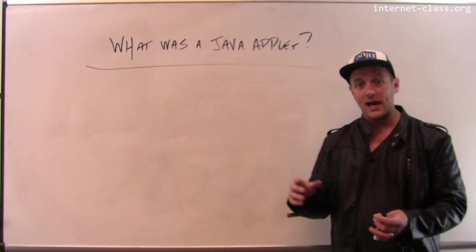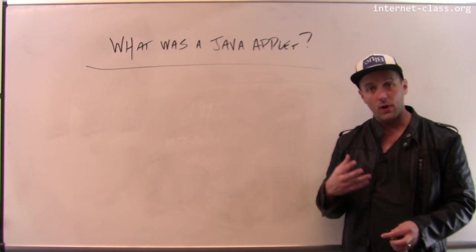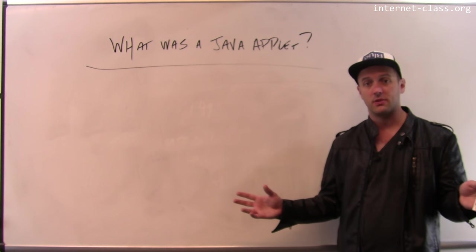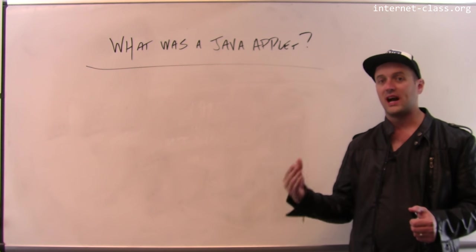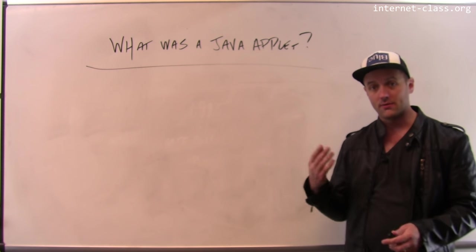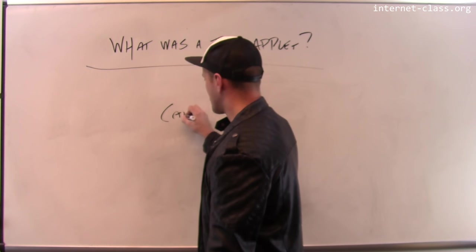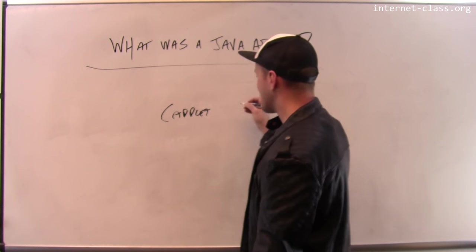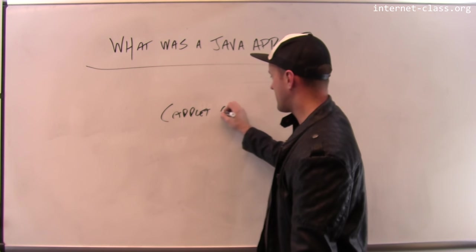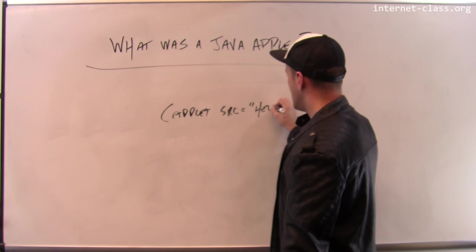So what was a Java Applet? Browsers for a while, most major browsers until recently, provided a way for you to load and run some Java bytecode as part of loading a page. So you would have a tag on your page. I can't remember, maybe it was called Applet or something. And you would give it a class name, sort, I don't, again, I have no idea. I've never used these. So it's like hello.class.